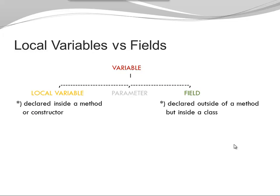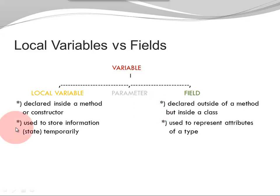Let's look at the difference between local variables and fields. Local variables are declared inside a method or constructor, while fields are declared outside of a method but inside a class. Local variables are used to store information or state temporarily. The moment the code block where my local variable was declared terminates, my local variable goes out of scope and is no longer available.